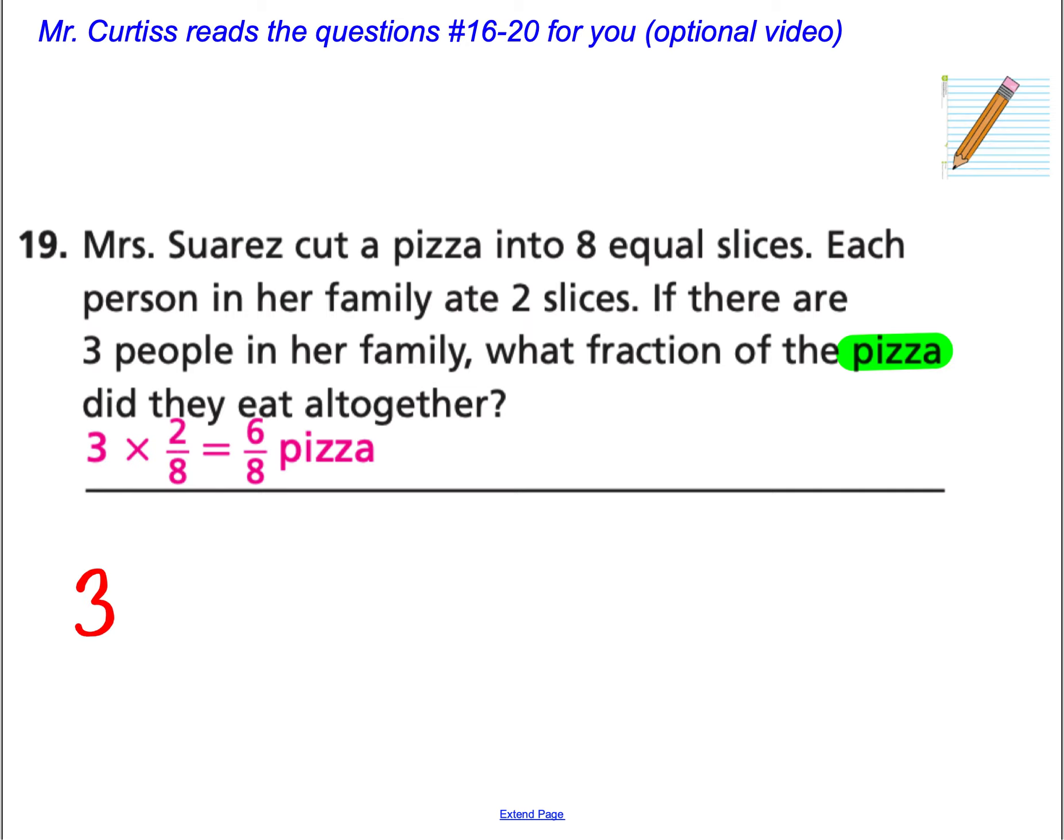So we are going to multiply the 3 people eating 2/8 slices of the whole pizza. And remember, we put the whole number over a 1 to multiply across. 3 times 2 is 6. The denominator is 1 times 8 is 8. And there's 6/8 pizza.